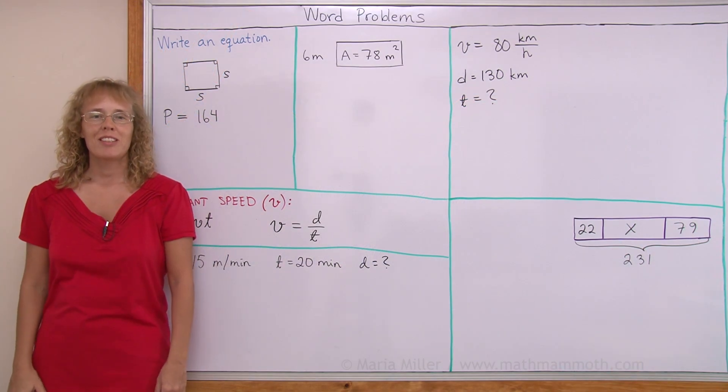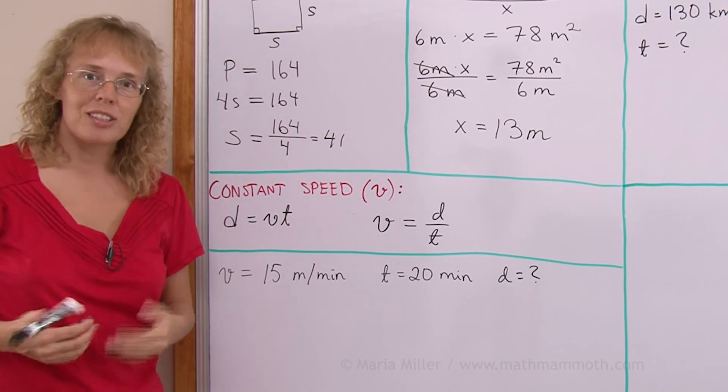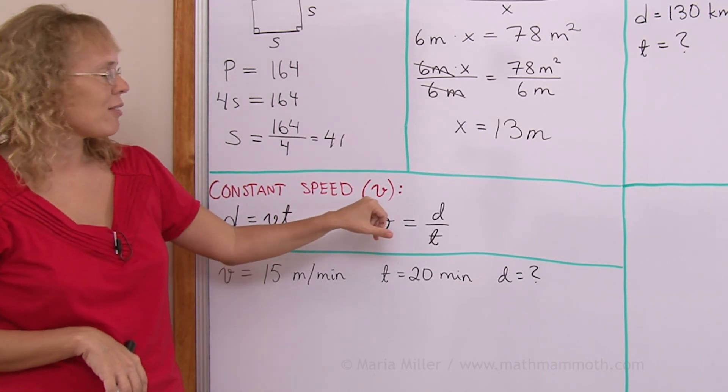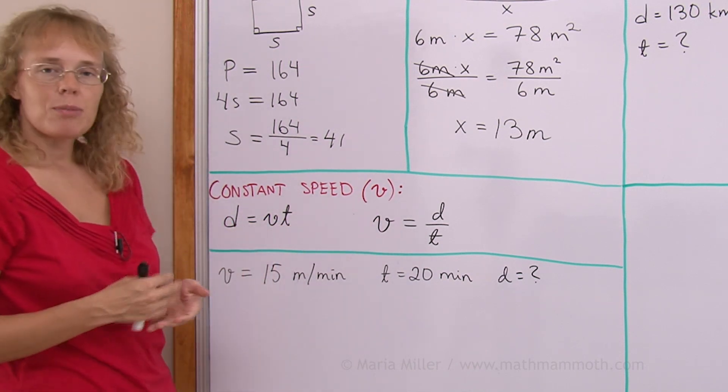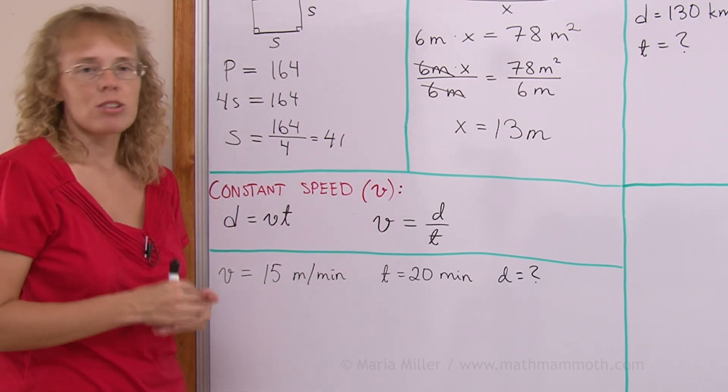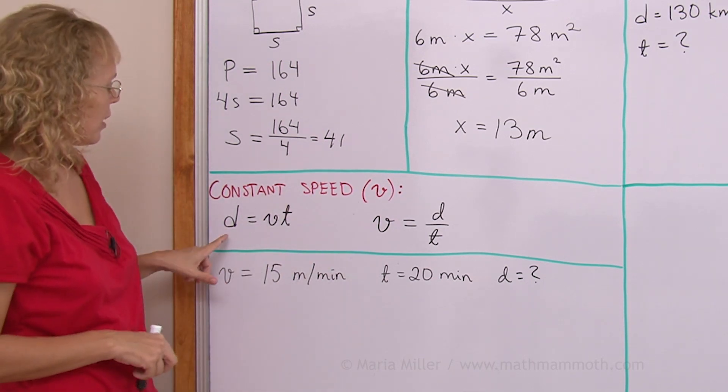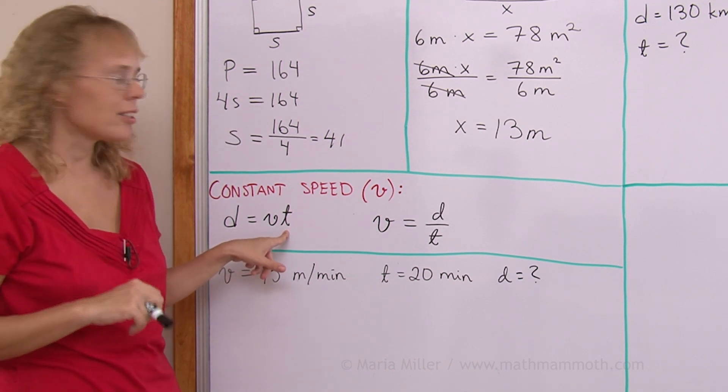Hello, my name is Maria Miller from MathMammoth.com. In this video we're going to look at a very important situation, constant speed, denoted here by V from velocity. It's sometimes denoted by R as a rate, but I chose to use V as it is in physics and science. D is distance and T is time. Those are easier, right?